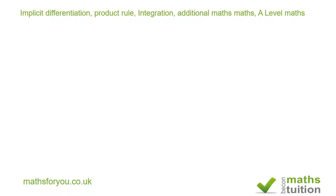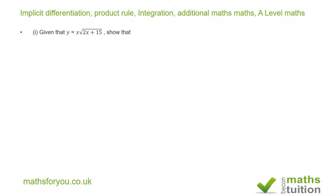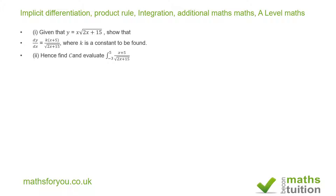Welcome to this exercise in which we try to solve problems involving differentiation. It's given that y equals x times the square root of 2x plus 15. Show that dy/dx equals k times x plus 5 over the square root of 2x plus 15, where k is a constant to be found. Secondly, find c and evaluate the integral of x plus 5 divided by the square root of 2x plus 15, within the limits of 5 and minus 3.